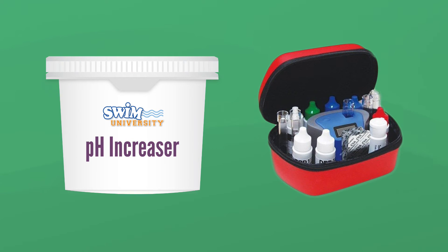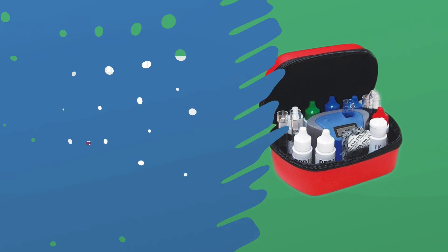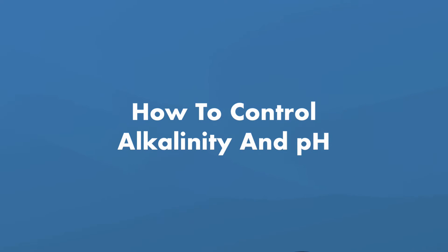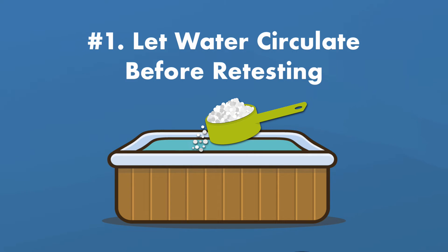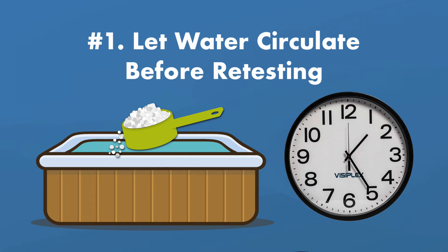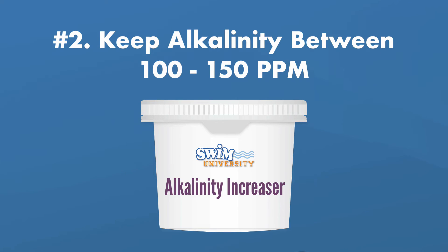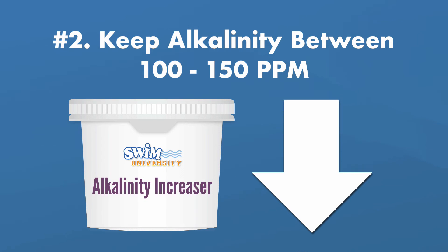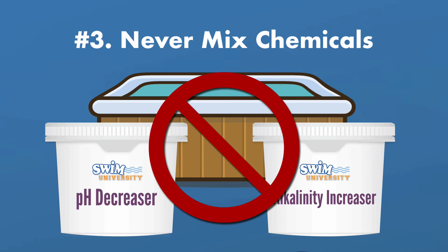Always test your hot tub before adding any chemicals to make adjustments. After adding any chemical to your hot tub, allow the water to circulate for at least 15 minutes before retesting, or retest the next day for more accurate readings. Some sources recommend keeping your alkalinity between 80 and 120 PPM, but we recommend between 100 and 150 PPM — that gives the alkalinity more room to come down before having to adjust again. And never mix chemicals together; add them one at a time, at least 15 minutes apart, with the cover off your hot tub.